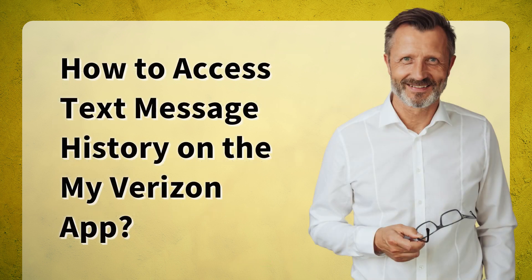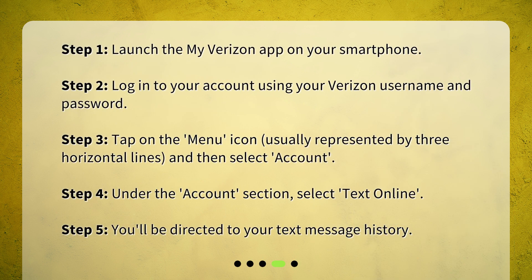How to access text message history on the My Verizon app? Step 1: Launch the My Verizon app on your smartphone. Step 2: Log into your account using your Verizon username and password. Step 3: Tap on the Menu icon, usually represented by three horizontal lines, and then select Account. Step 4: Under the Account section, select Text Online. Step 5: You'll be directed to your text message history.